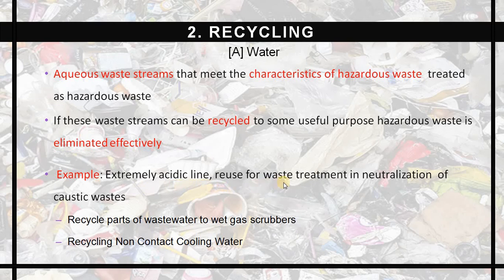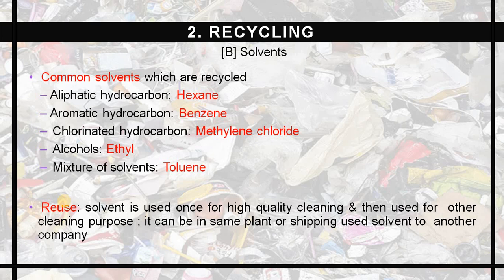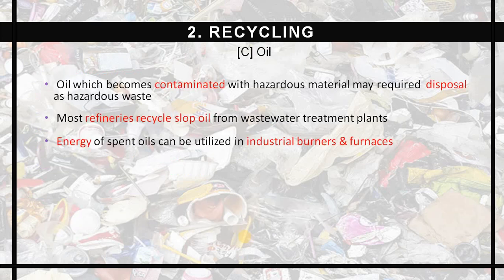An example is the use of acidic waste in the neutralization of caustic waste. For solvents, common solvents such as hexane, benzene, chloride, ethyl, etc. can be recycled and reused, which will reduce the quantity of hazardous waste requiring treatment and reduce the load on the treatment plant.